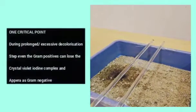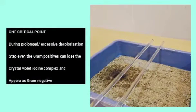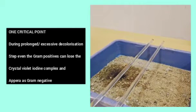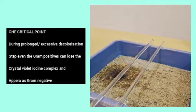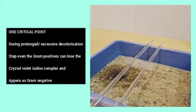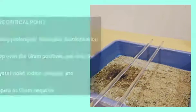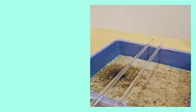One critical point: during prolonged and excessive decolorization step, even the gram positives can lose the crystal violet iodine complex and appear as gram negative. So, this is the critical step.